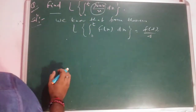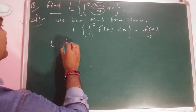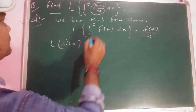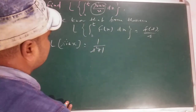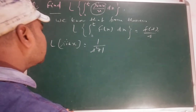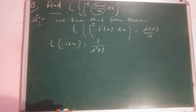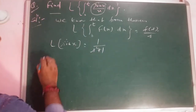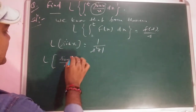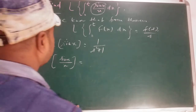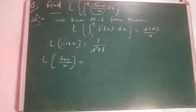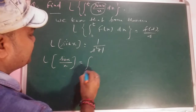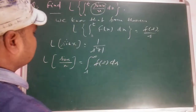So first, L{sin x} = 1/(s² + 1). Then to find L{sin x / x}, we use the theorem: L{f(t)/t} = ∫ₛ^∞ F(s) ds. So this equals ∫ₛ^∞ F(s) ds, where F(s) = 1/(s² + 1).